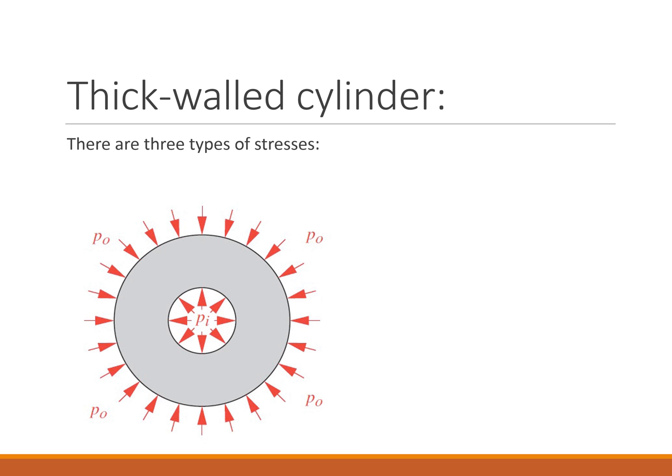There will be three stresses that affect the elements within the cylinder. Considering a point within the cylinder, the first stress would be a tangential stress, the second would be a radial stress, and the third — if the cylinder is closed — will be an axial stress, working into the page. All of these would be orthogonal to each other.